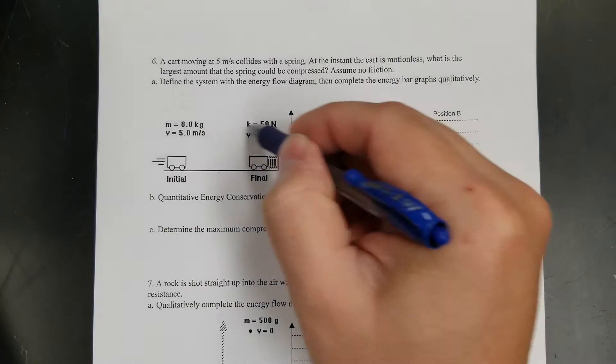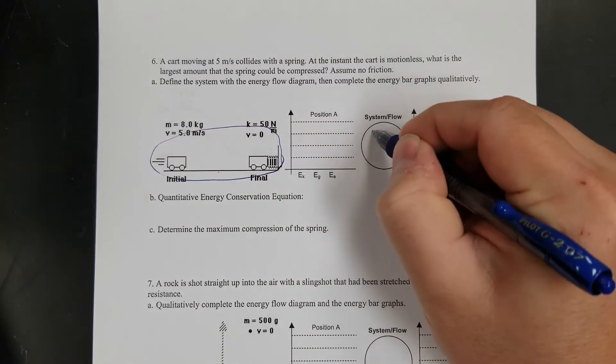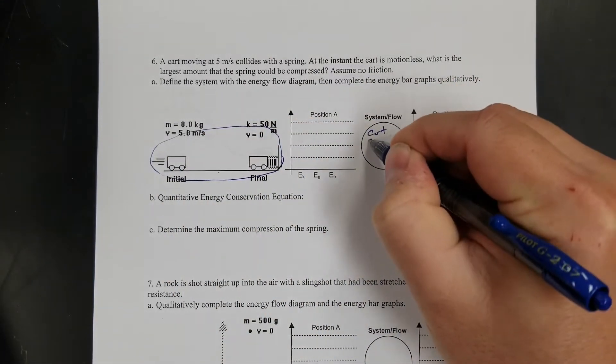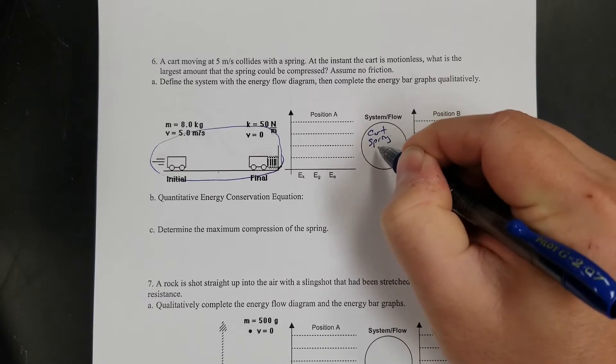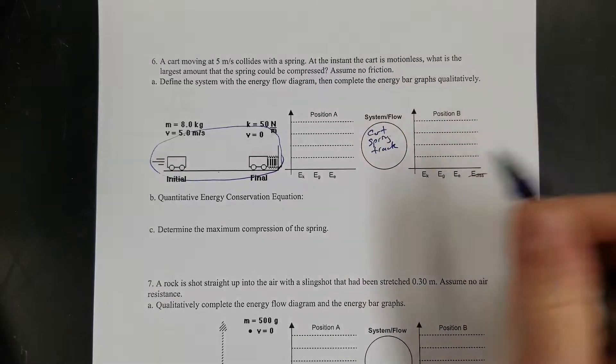Define the system with the diagram. Okay, so the system is everything, right? So the system is the cart, the spring, and the track.